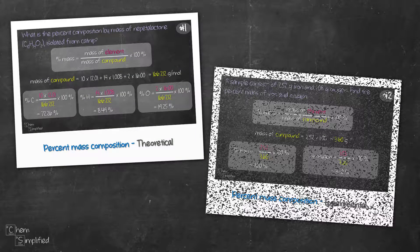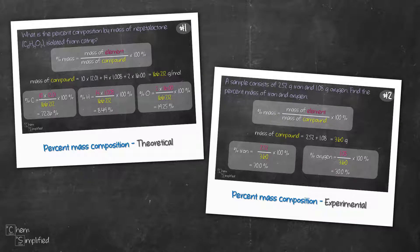In this video, we're going to discuss how to calculate the percent mass composition for each atom in the formula. There are two ways to go about it depending on the question.